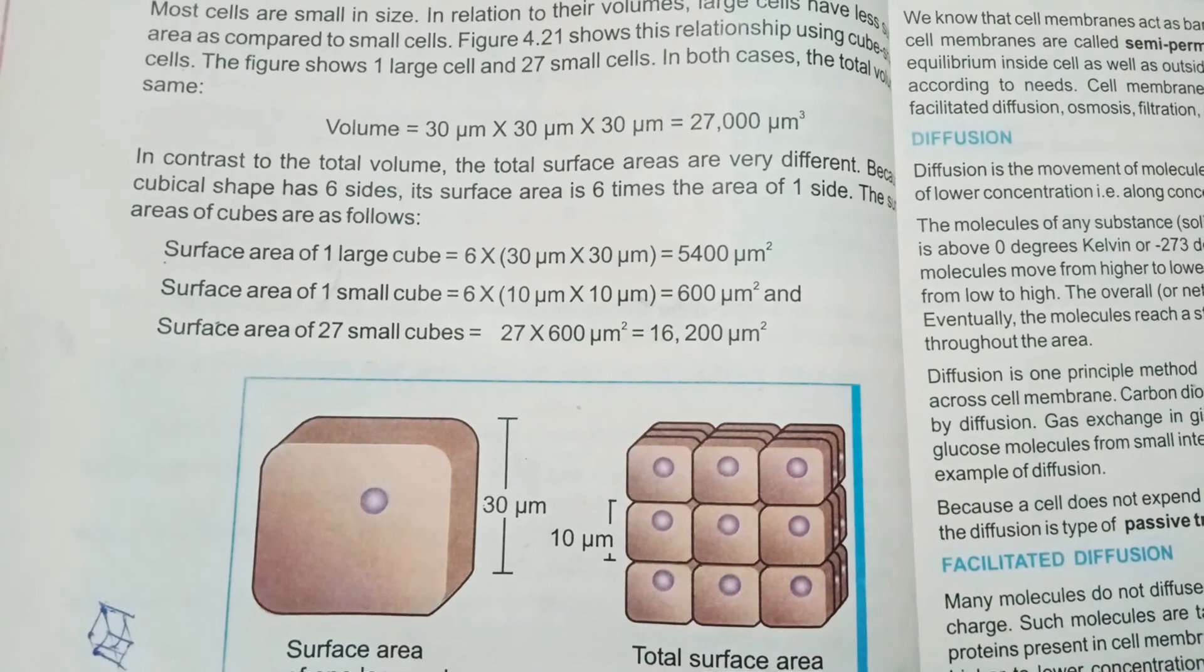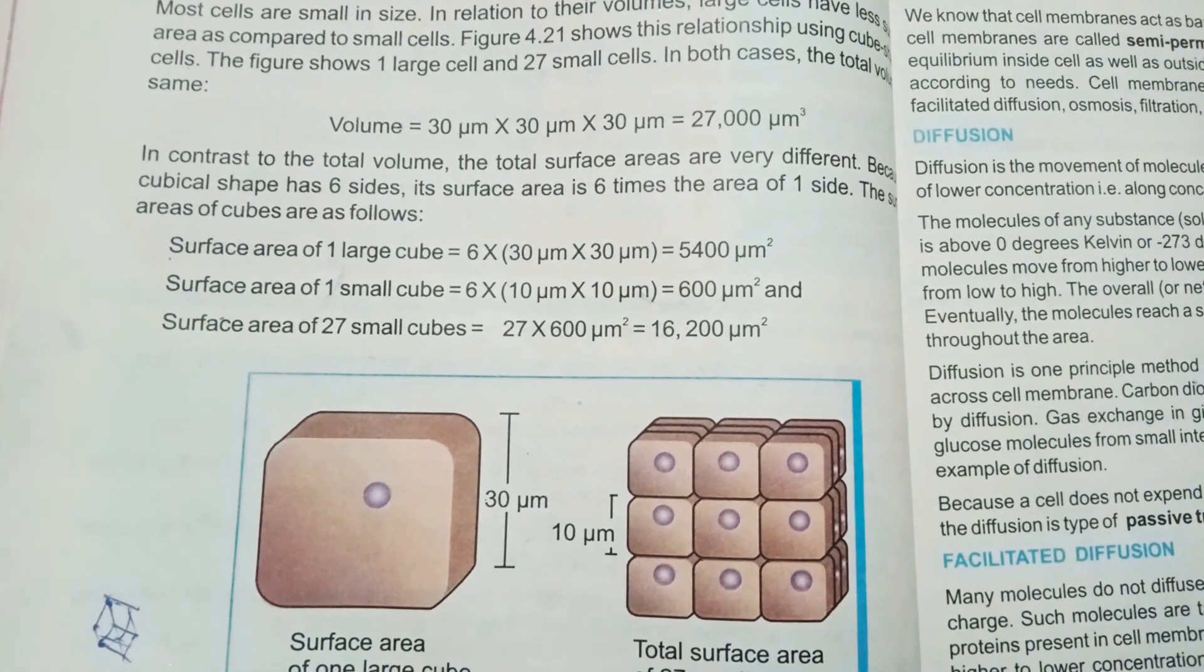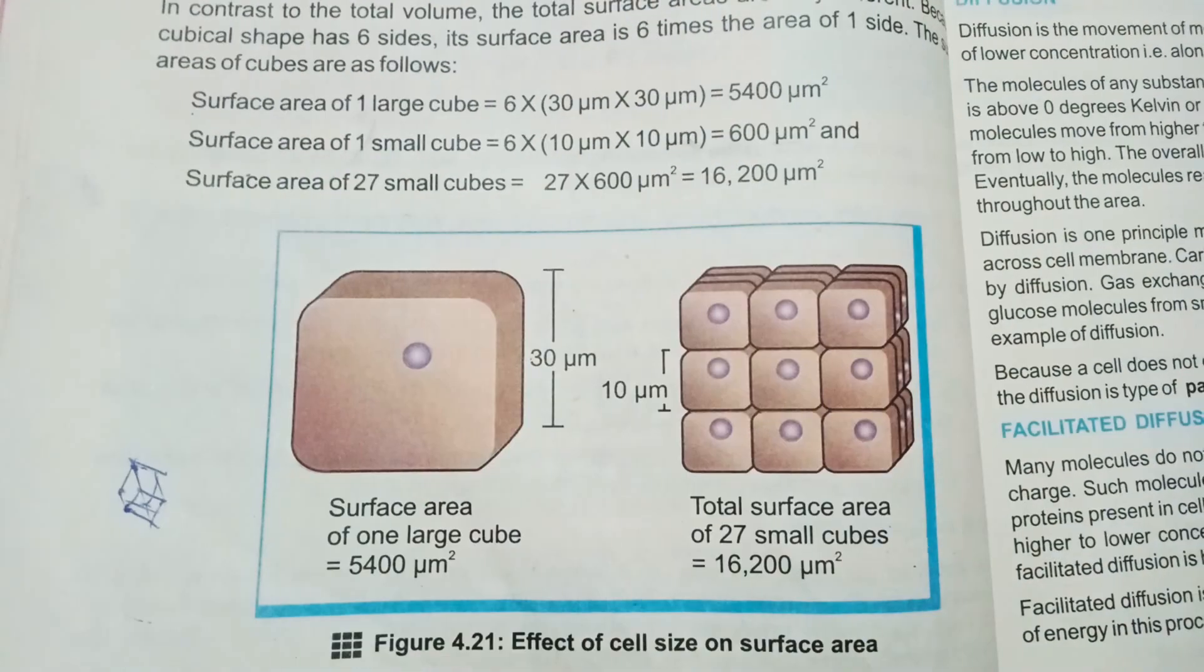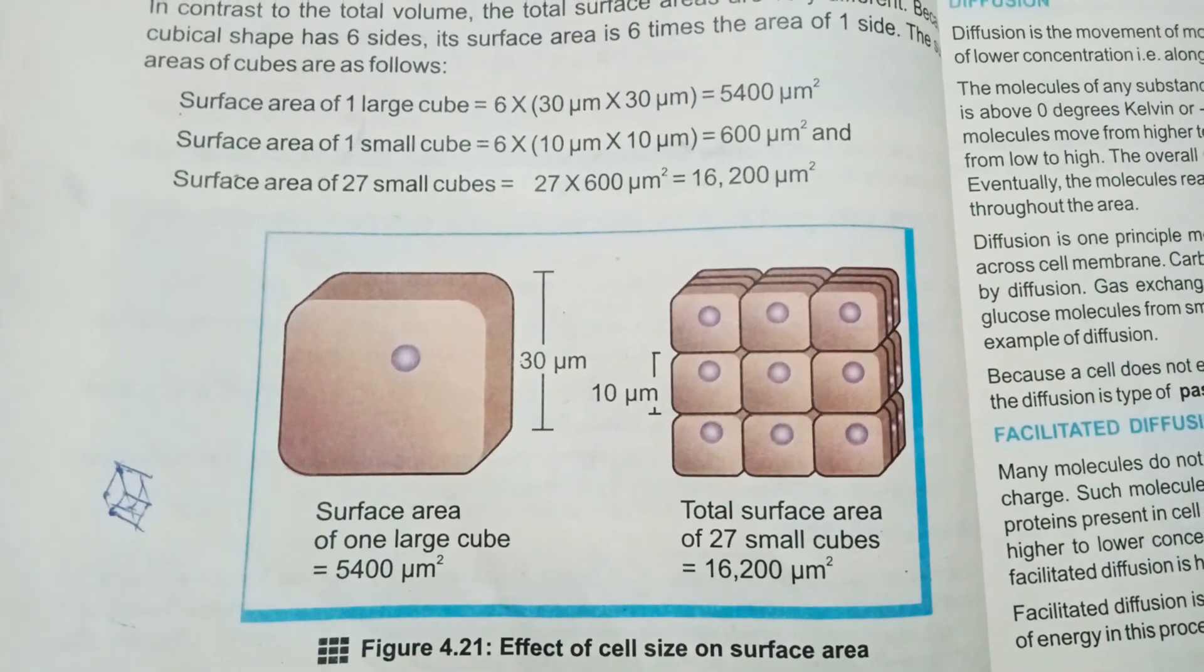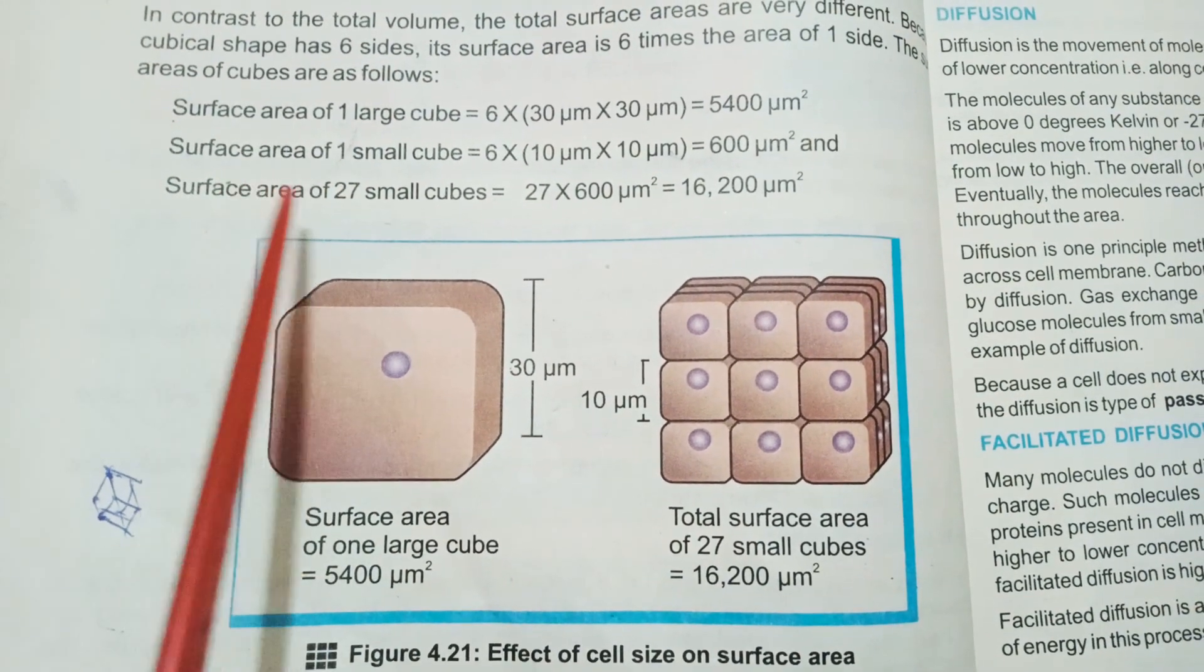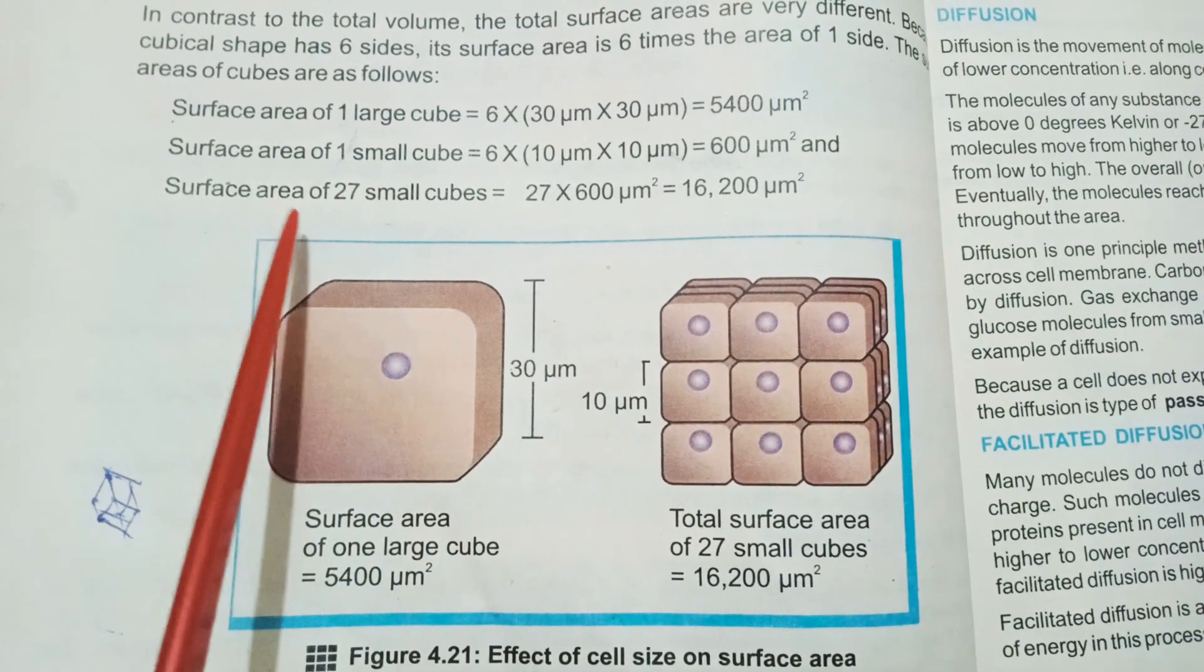The areas of cubes are: you will find the surface area of one large cube, the surface area of one small cube, the surface area of 27 small cubes by using these values.